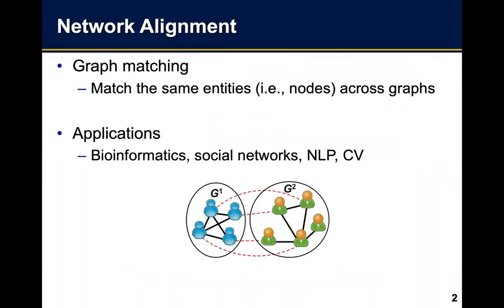Network alignment is also well known as graph matching. It aims to match the same entities across multiple graphs. It has been widely applied to many real-world applications such as protein network alignment in bioinformatics, user account linking in multiple social networks, object matching in computer vision, and knowledge translation in multilingual knowledge bases.